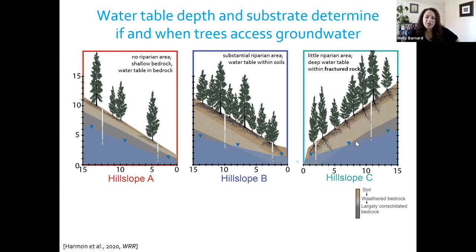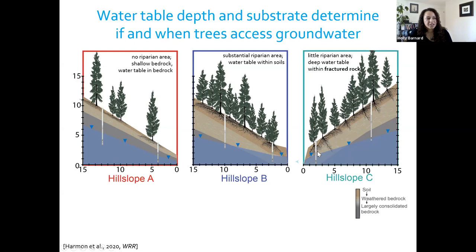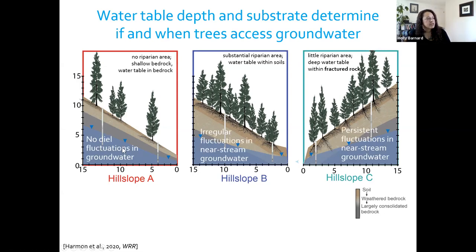Hillslope C, where we saw the strongest relationships between transpiration and groundwater fluctuations in the riparian area, has thinner soils but a very thick area of fractured bedrock, and the water table intersects that fractured bedrock. We see the strongest connection here: a reduction in soil substrate leads to trees relying on that weathered bedrock water, and we have this perfect storm where the water table intersects the fractured area, making it accessible to trees. No diel fluctuations on hillslope A with large soil water availability, irregular fluctuations on hillslope B, and the most persistent fluctuations on hillslope C with large fractured water availability but less soil water.